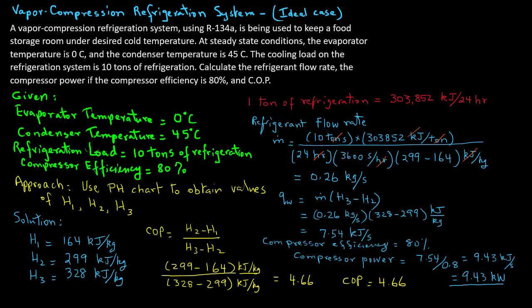In this example, we saw how to determine the enthalpy values from the pressure-enthalpy charts and then use those values to calculate the refrigerant flow rate, the compressor power, and the coefficient of performance of the refrigeration system.